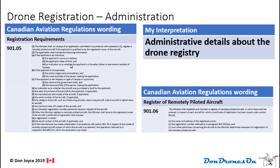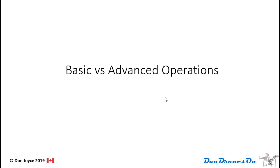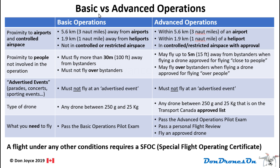The next two rules, 90105 and following, are really administrative in nature and don't really pertain to real people like us. Moving on to basic versus advanced operations — it's really important to understand the difference between these two when it comes to flying a drone. Let's walk through the five key criteria that distinguish them. We'll start with airports and controlled airspace. When you are flying with a basic operations certificate, you must stay 5.6 kilometers away from airports.